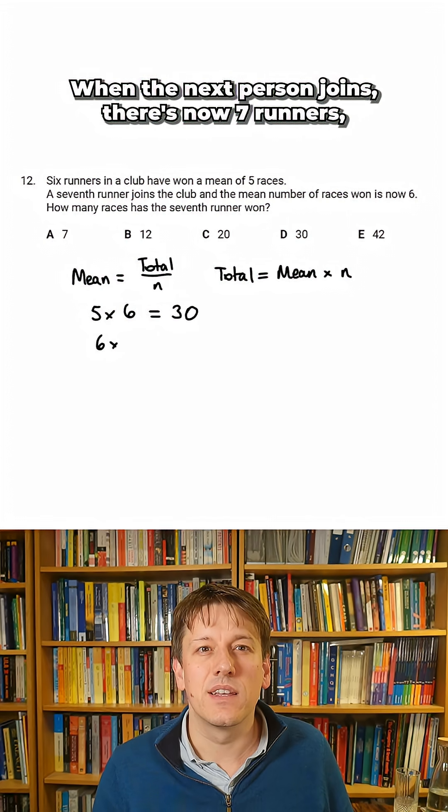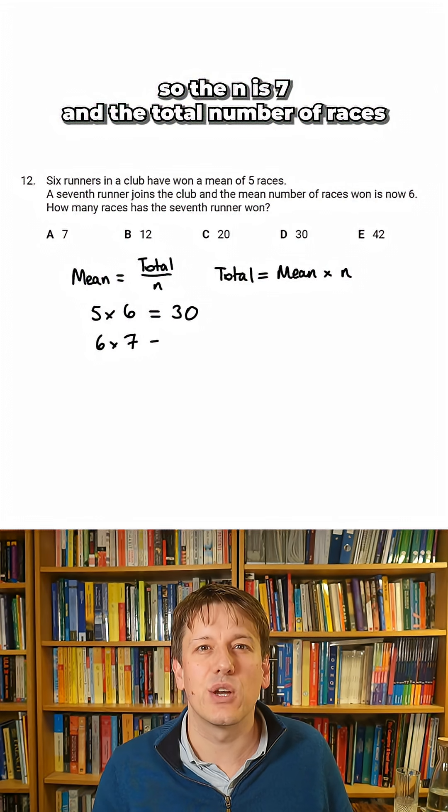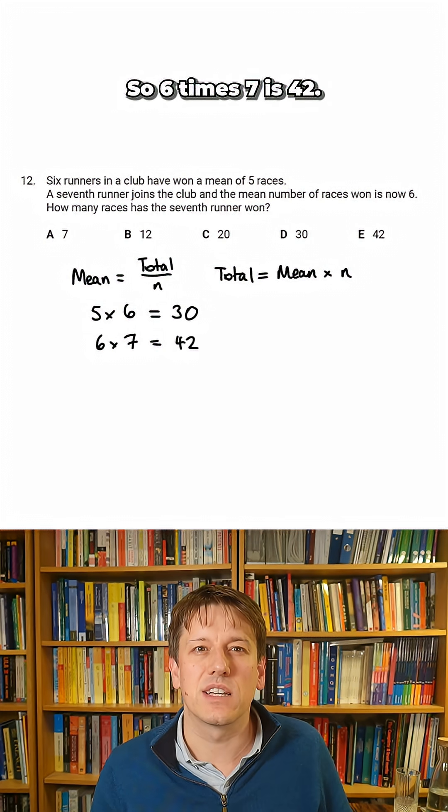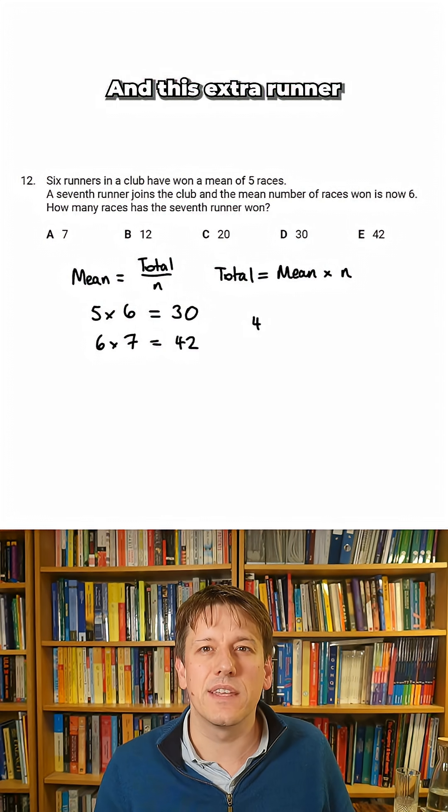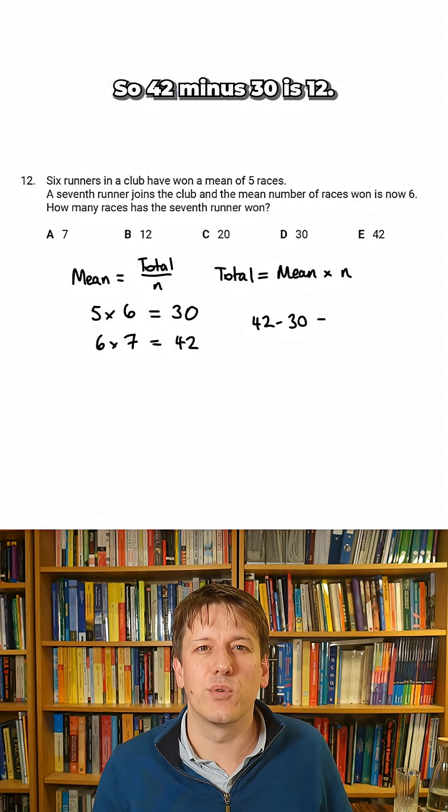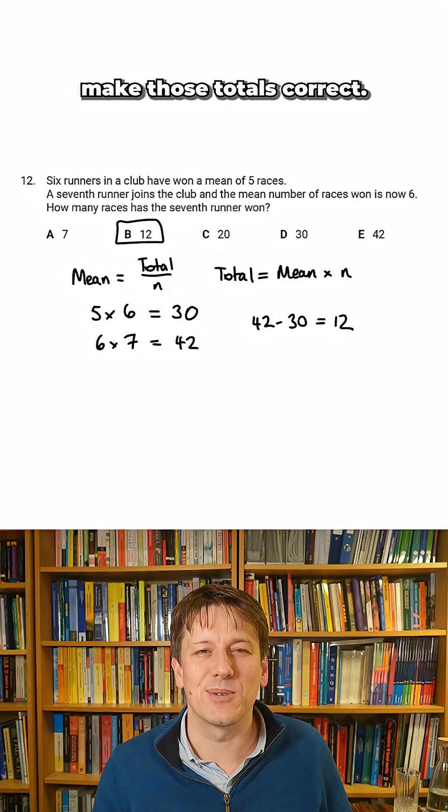When the next person joins there's now seven runners, so the n is seven, and the total number of races won then is six times seven, which is 42. So 42 minus 30 is 12, and that new person must have won 12 races to make those totals correct.